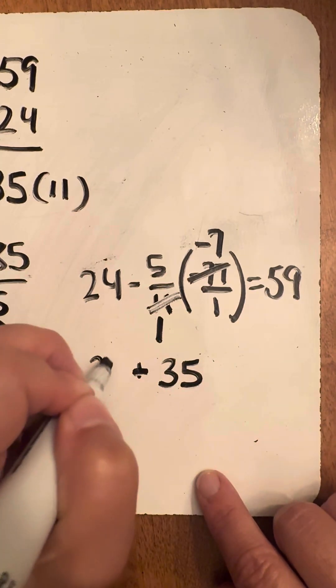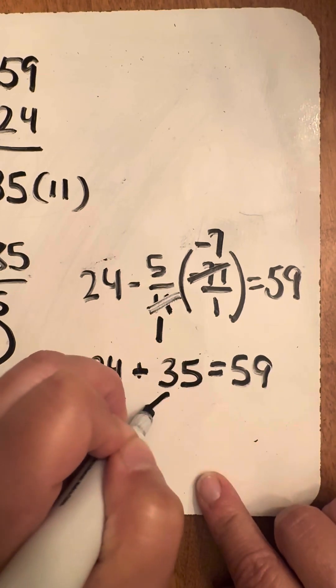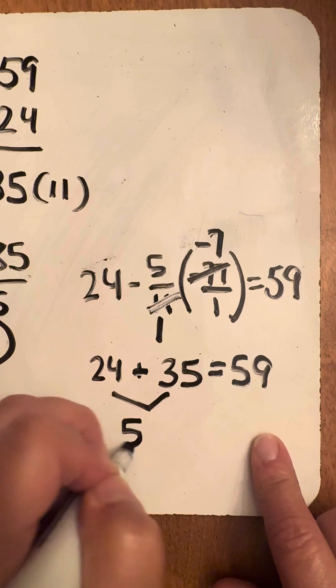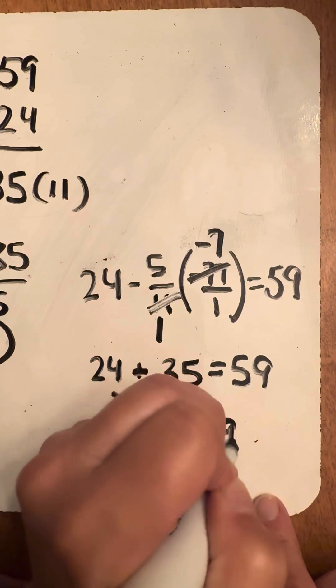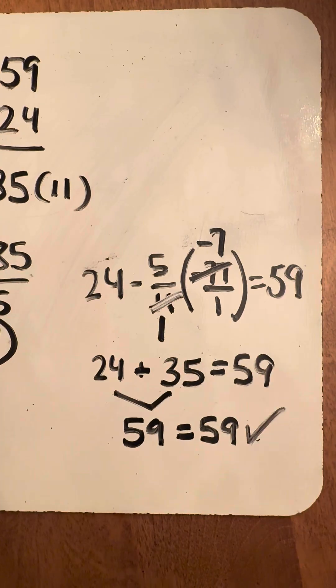And then you've got 24 here. And when I add these two numbers together, they should balance out and give me 59. And guess what? They do. Which means I did my answer correct, and I did this problem accurately.